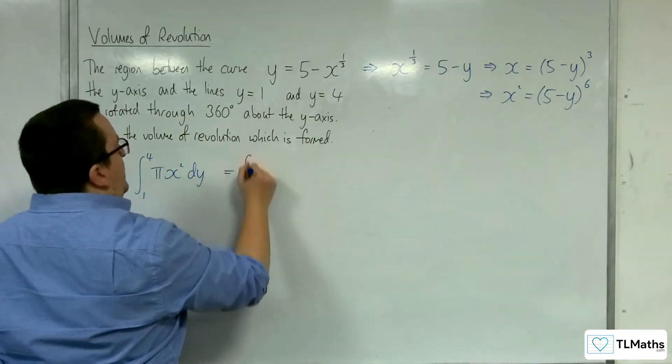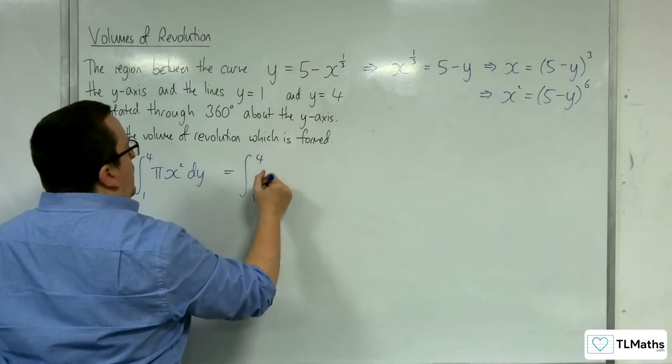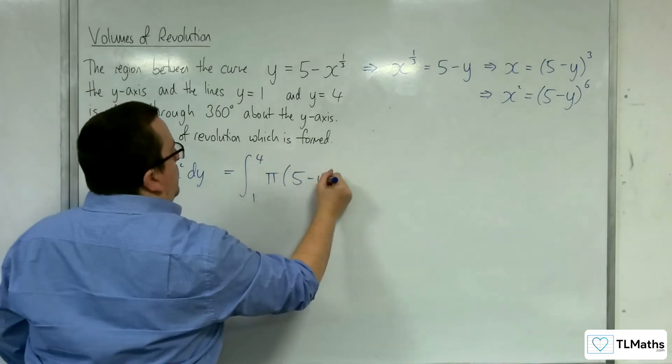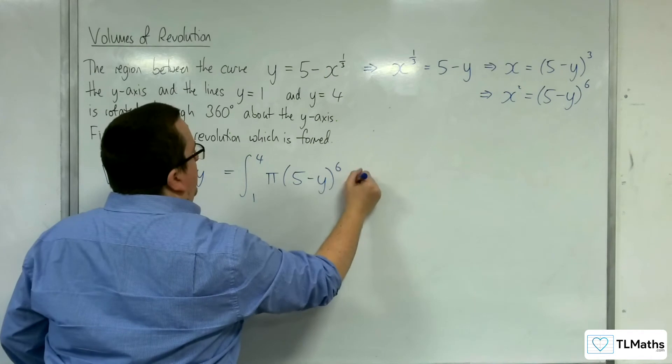So this is going to be equal to the integral between 1 and 4 of pi times 5 take away y to the power of 6, dy.